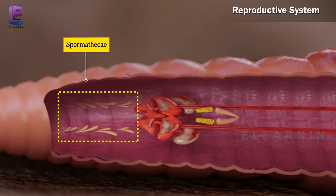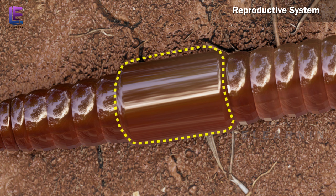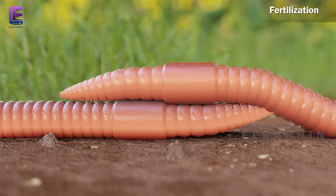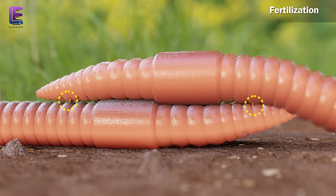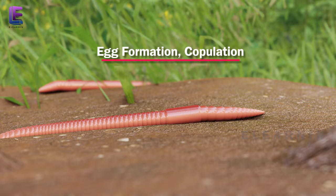The spermathecae receive and store spermatozoa during copulation. Ovarian funnels are present beneath the ovaries, which continue to oviducts, join together, and open on the ventrolateral side as a single median female genital pore on the 14th segment. During fertilization, a mutual exchange of sperm occurs between two worms during mating. One worm finds another and they mate, juxtaposing opposite gonadal openings, exchanging packets of sperm called spermatophores.